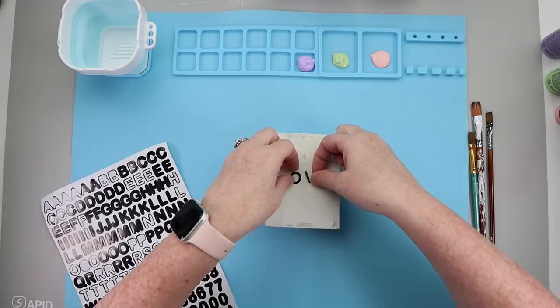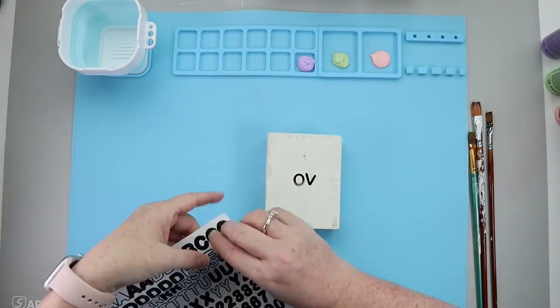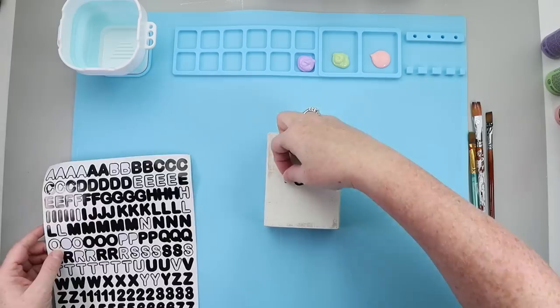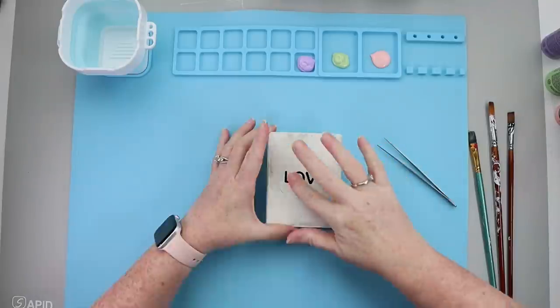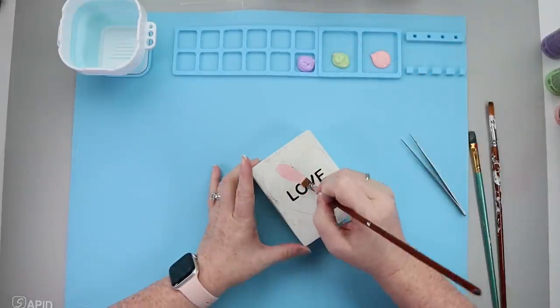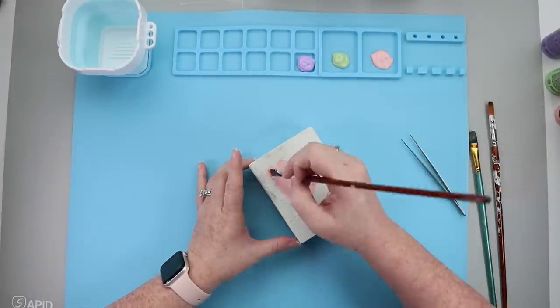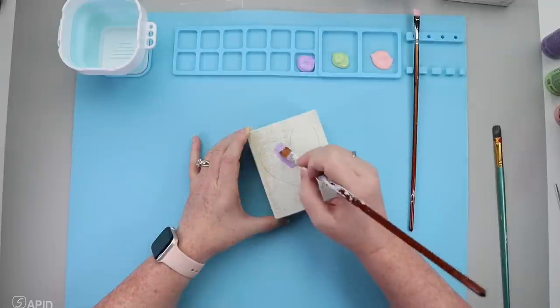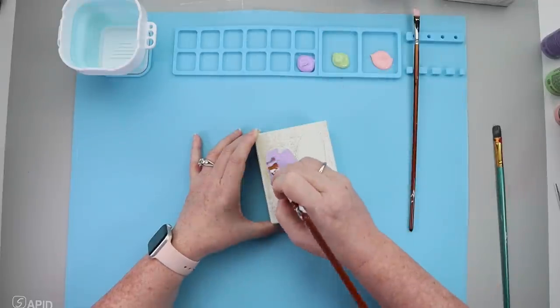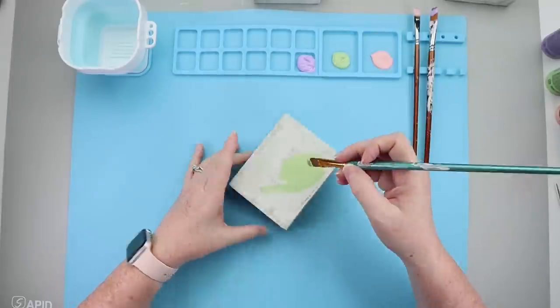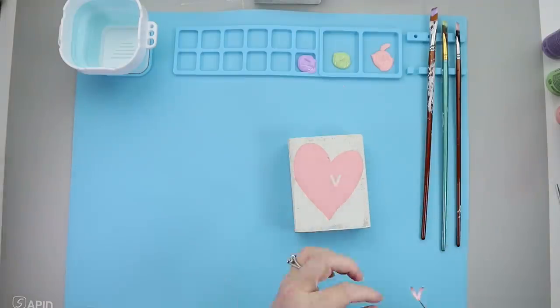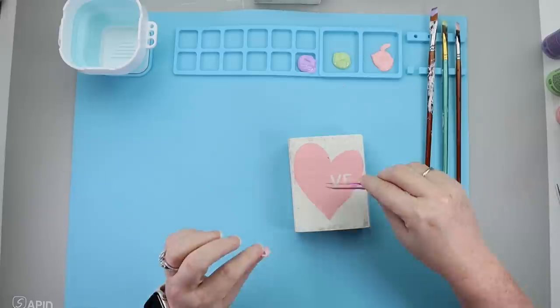Now for the first one, I am going to use some of these Dollar Tree stickers and take off the letters to spell out love and stick those down kind of in the center of the block. Then taking the pencil, I'm going to sketch out a heart around it and then start painting with some pink paint. Once I get that all nice and painted, I'll pull off the love letters and it will leave a nice little stencil vibe. Now you could just leave stickers on there if you wanted to, or you could actually use real stencils for this step.